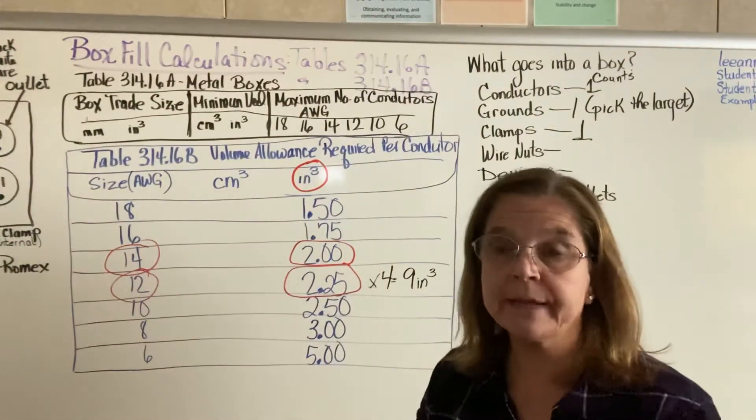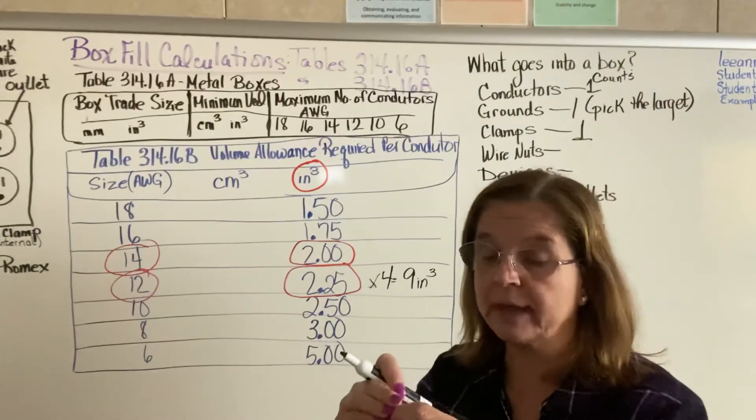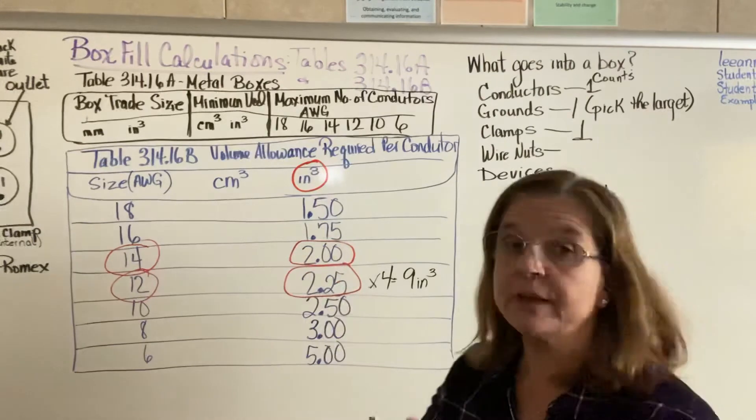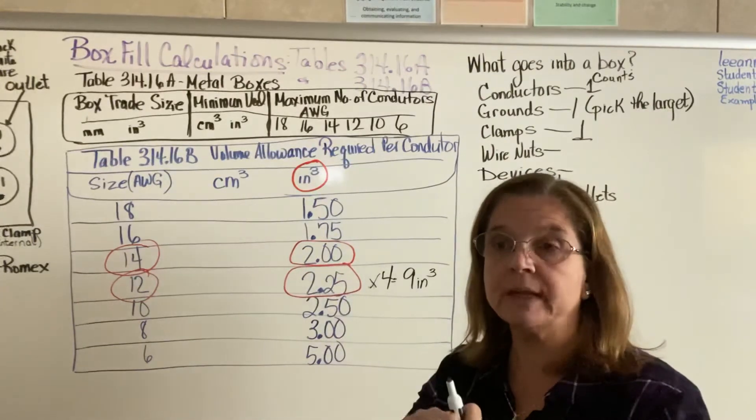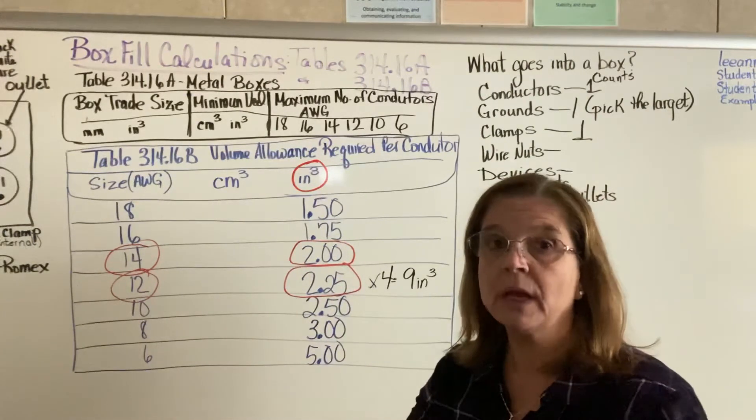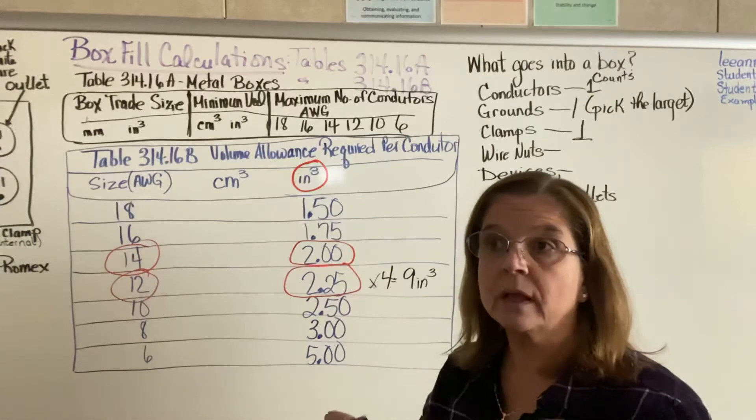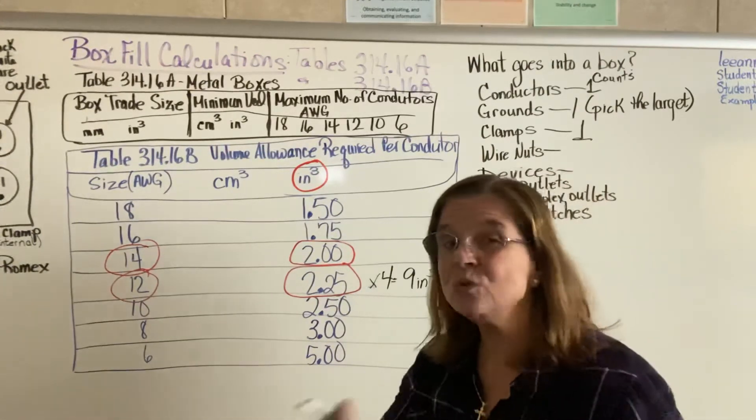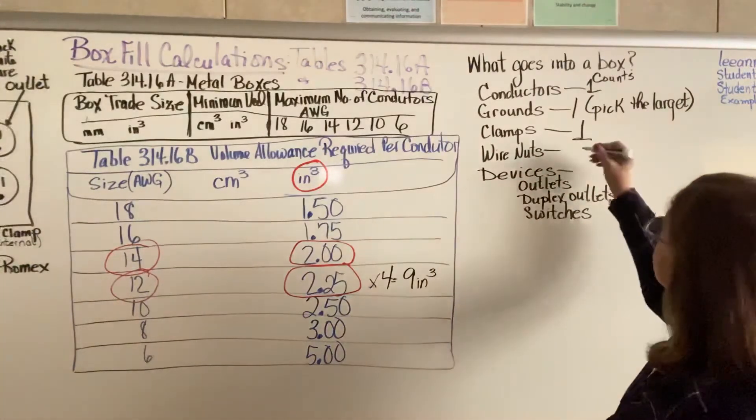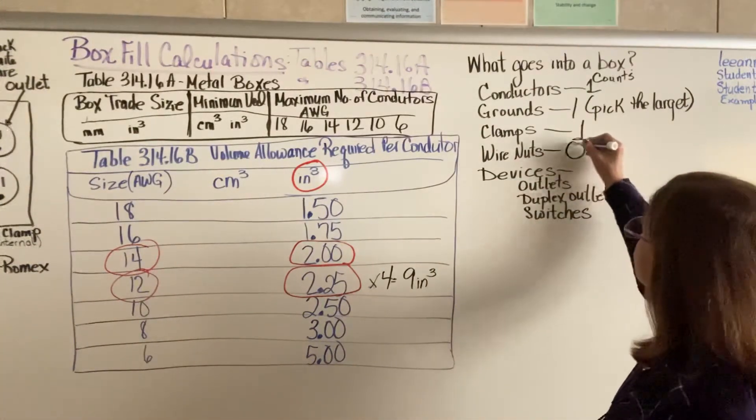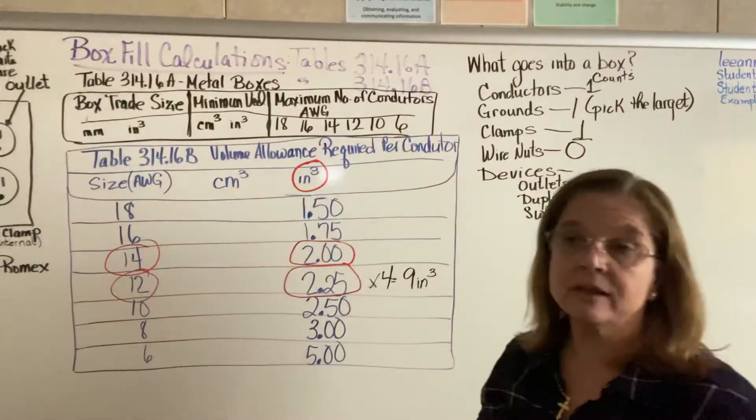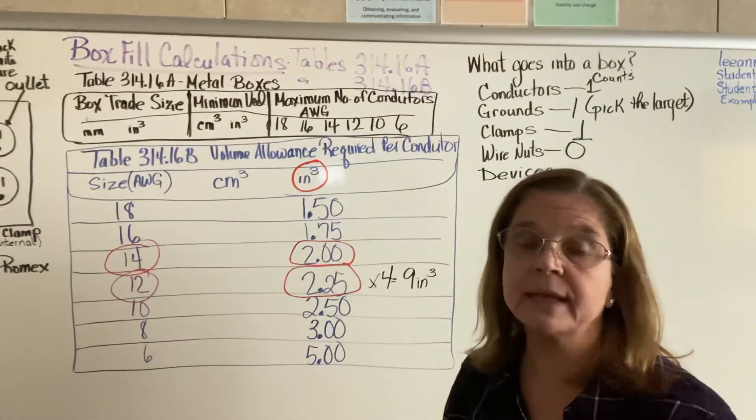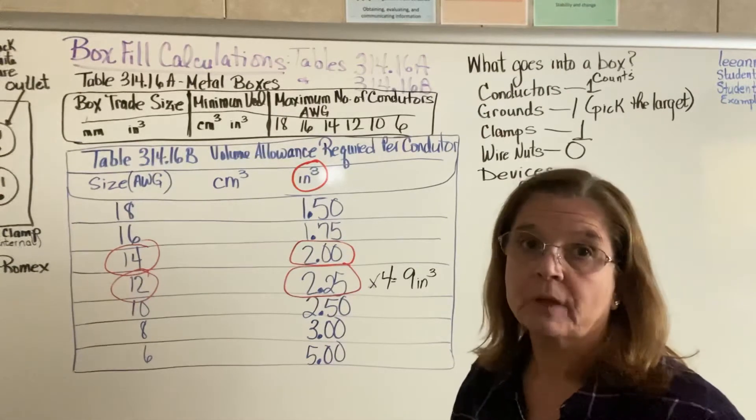If you use wire nuts to bring the three hot wires together and tighten them, and the three neutral to tighten them, and the three grounds to tighten them, if you're using any type of wire nut, they don't count at all. So wire nuts count zero. They're there just to hold the wires together and a pigtail for you.